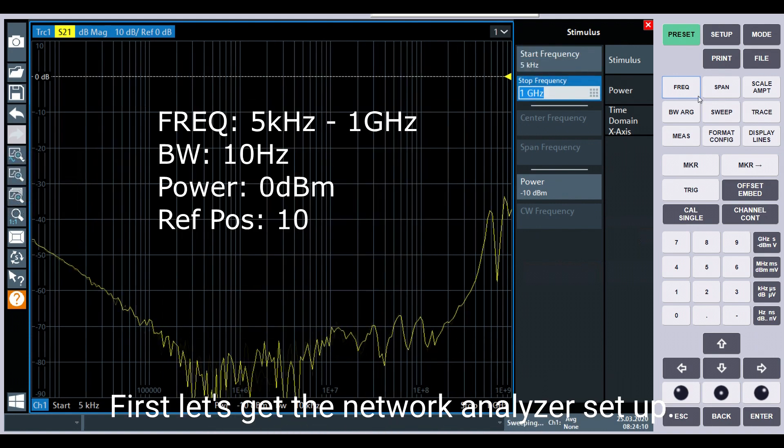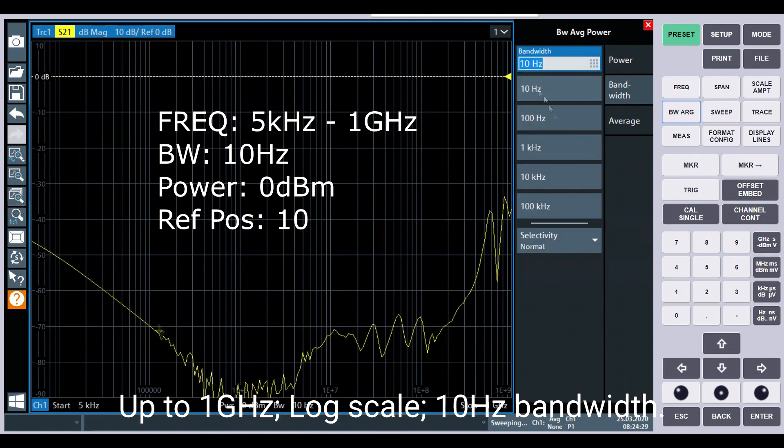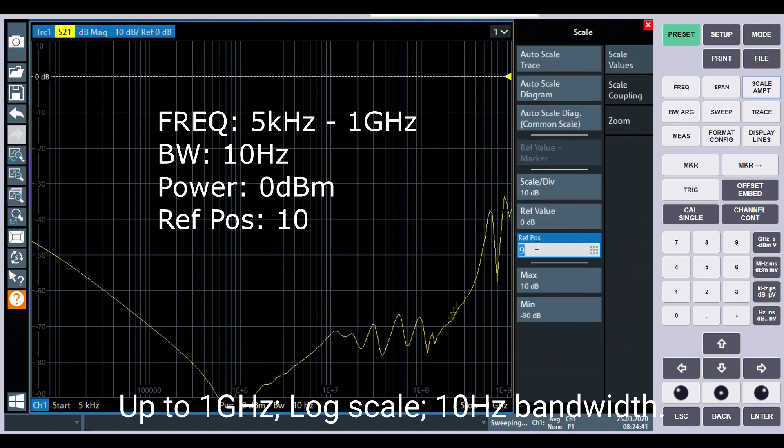First let's get the network analyzer set up. Up to 1 GHz, log scale, 10 Hz bandwidth.